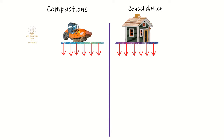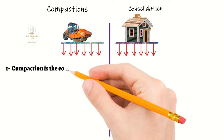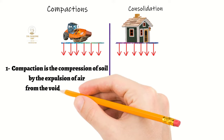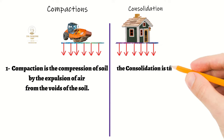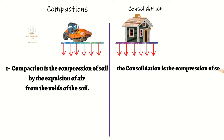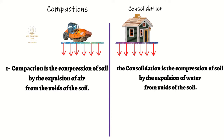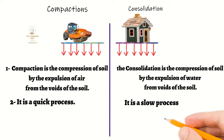The first main difference is that compaction is the compression of soil by the expulsion of air from the voids of the soil, while consolidation is the compression of soil by the expulsion of water from the voids of the soil.